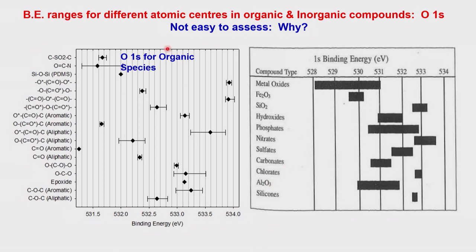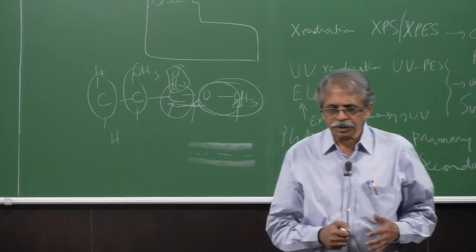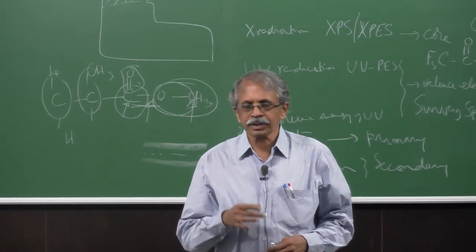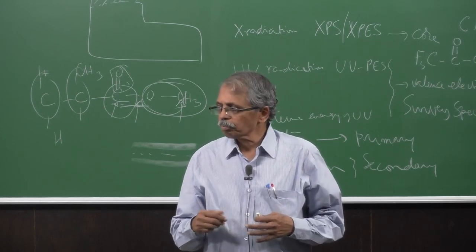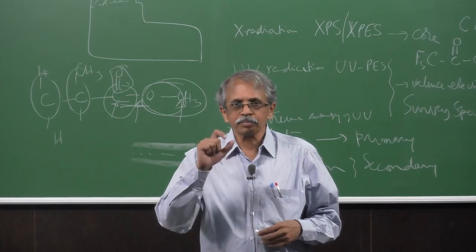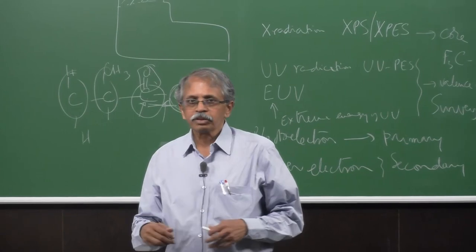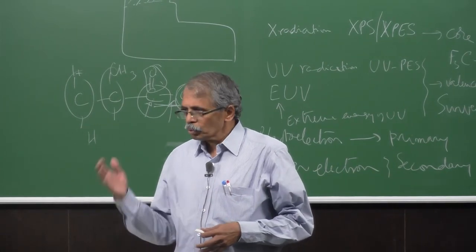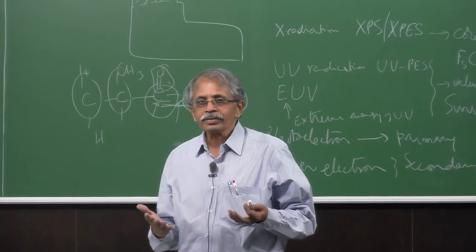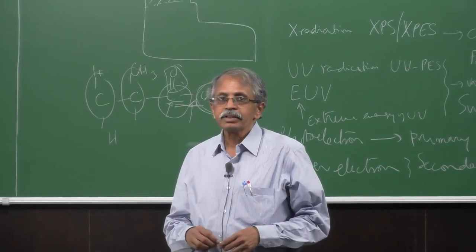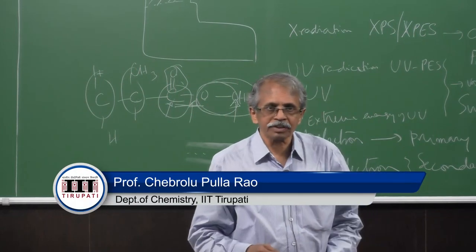For oxygen, the chemical shift range is also not very large, so in organic compounds oxygen is mainly used to support structural assignments from carbon and nitrogen. Carbon and nitrogen give the most useful structural information about what species are present at the surface. In the next class I will explain inorganic compounds and surface catalysis — for example, why catalytic rate decreases over time and what happens to the catalyst surface — all of which can be addressed using XPS. Thank you very much.